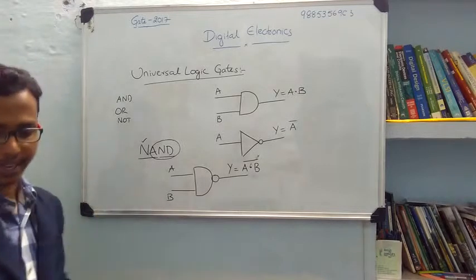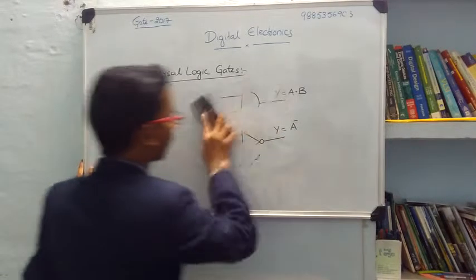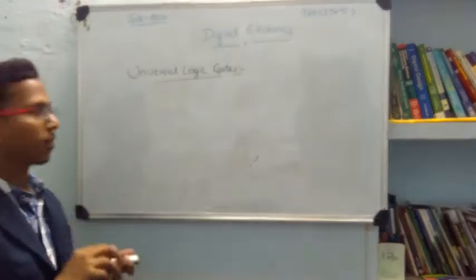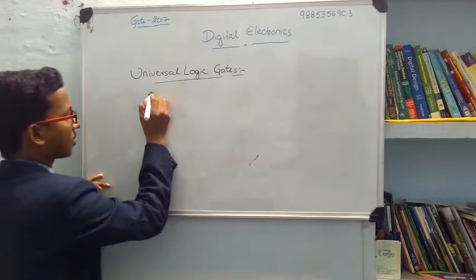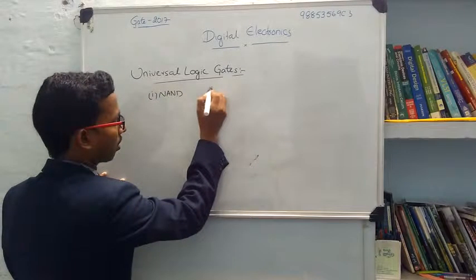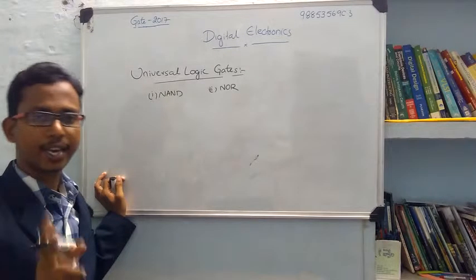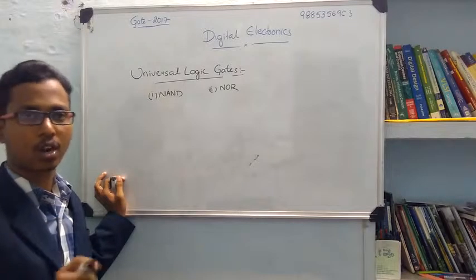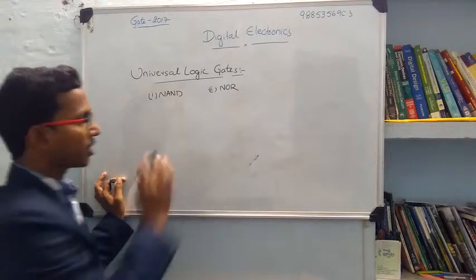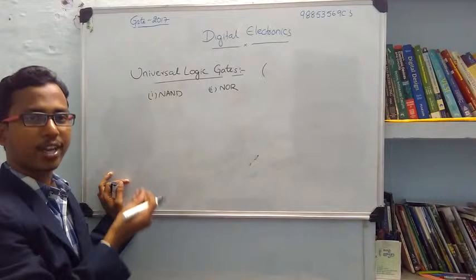Let me see the functionality of the NAND gate. There are two types of universal gates: one is NAND and another is NOR. The basic gates are three types — AND gate, OR gate, and NOT gate. But the universal gates are two: NAND and NOR. This is very important, as it is asked in various question papers.